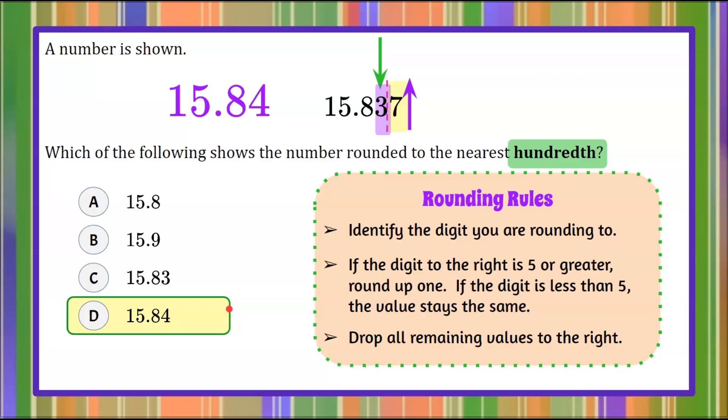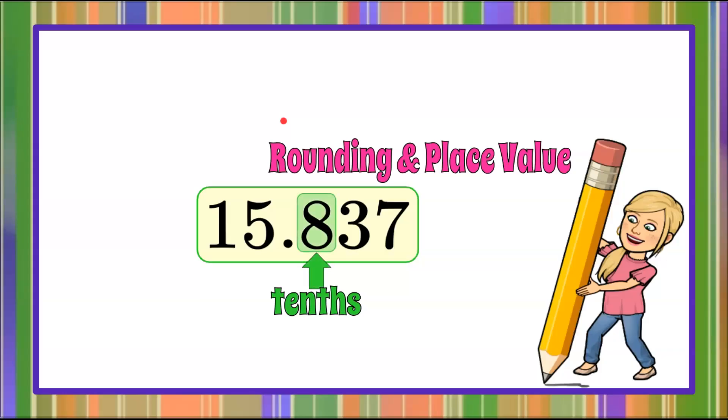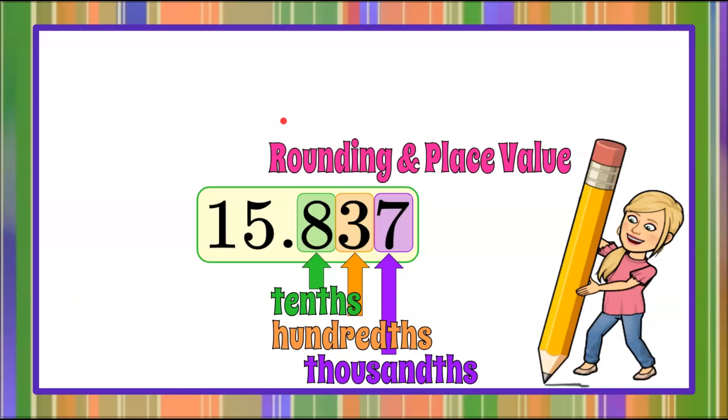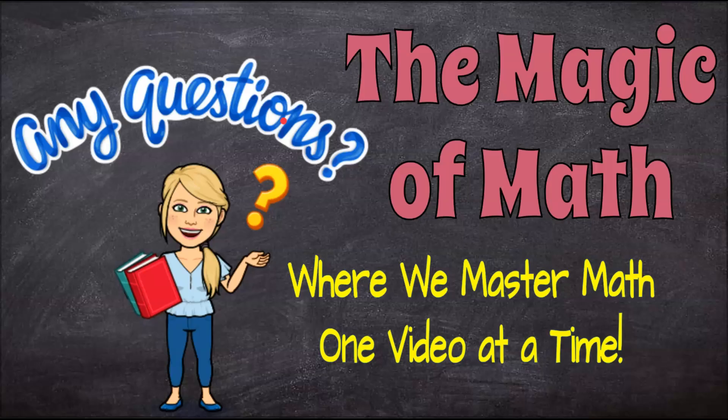15 and 84 hundredths is 15 and 837 thousandths rounded to the nearest hundredth. So that is rounding and place value here at The Magic of Math, where we continue to master math one video at a time. I hope you have a great day and come back soon.